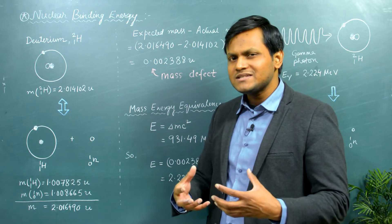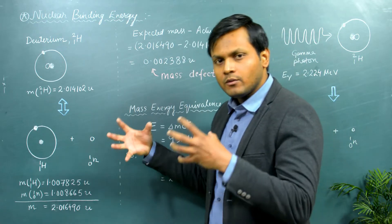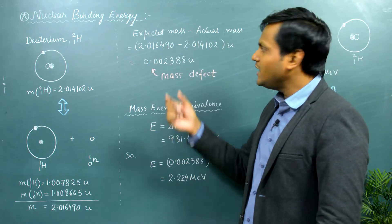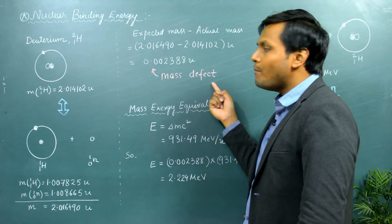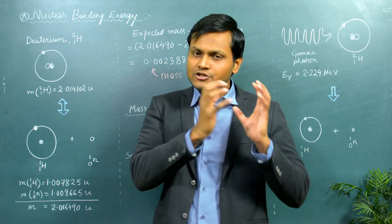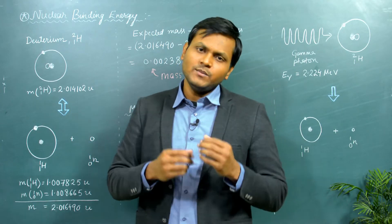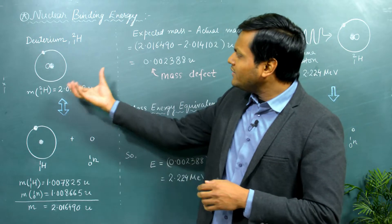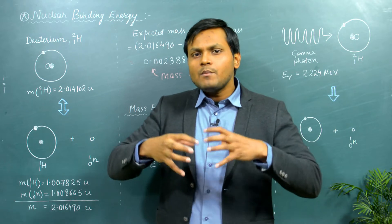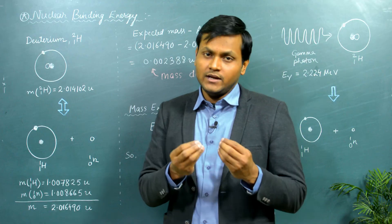Where is this extra mass coming from? The expected mass — obtained by summing up the constituent particles — and the actual mass are different from each other, and this difference is known as mass defect. Mass defect is the difference between the mass of the actual nucleus and the summation of all its constituent particles. One possible explanation is that when the deuterium atom was formed from its constituent particles, some amount of energy was released in the process, and this mass defect corresponds to that energy.